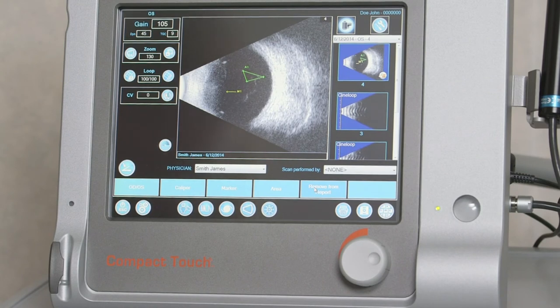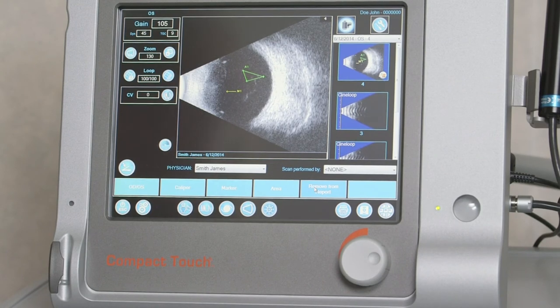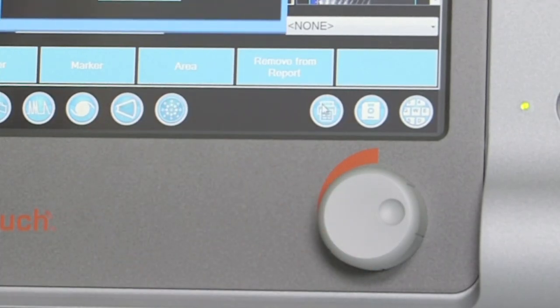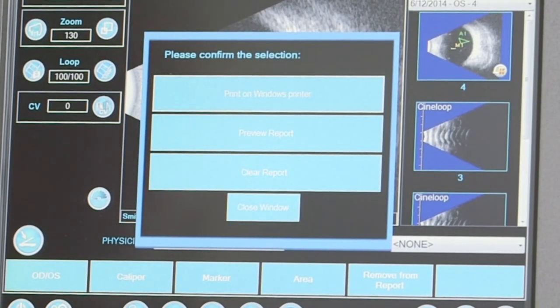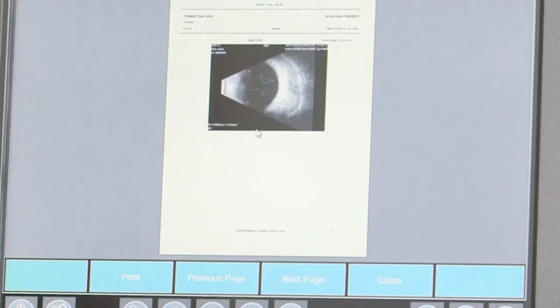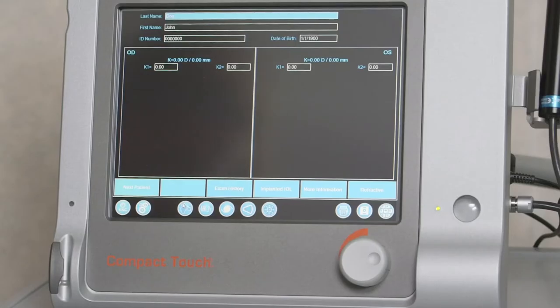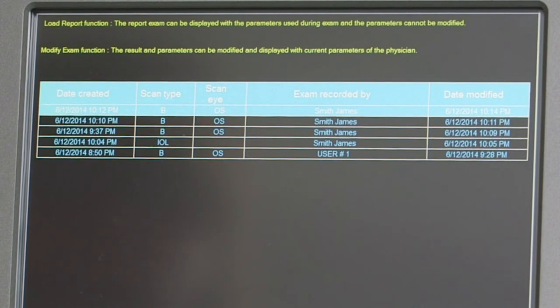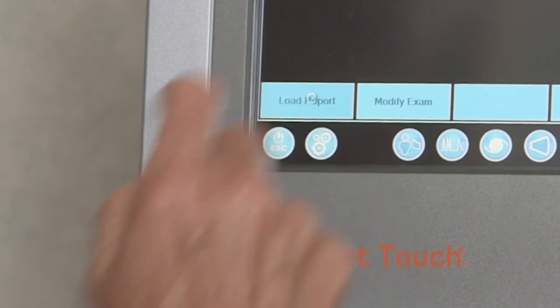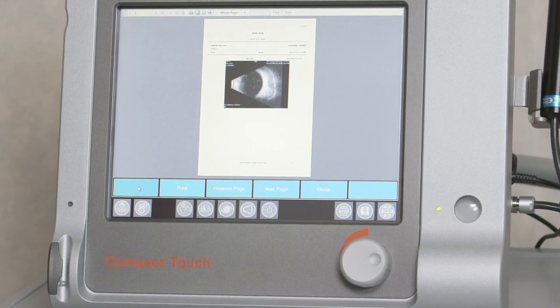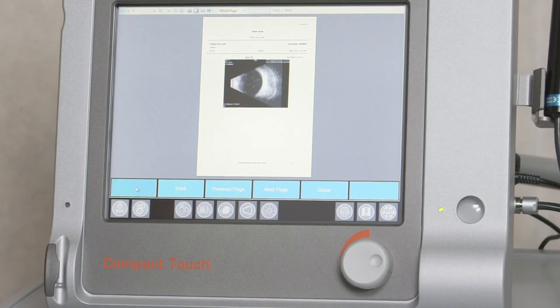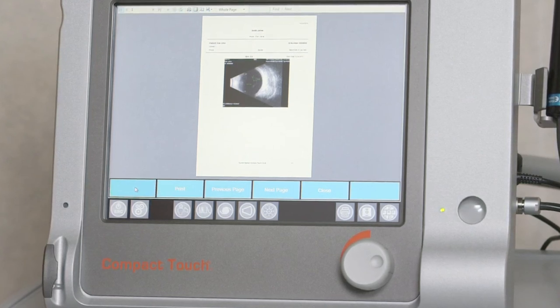Reports from A and B scans, pachymetry, or IOL calculations can be printed via the printer icon from the bottom toolbar using a video printer or a Windows printer. From this menu, the examiner can also opt to preview the report by selecting preview report. The examiner can review previous exams from the patient file screen. Choosing exam history from the toolbar displays a list of all previous exams. After selecting the exam to review or print, press load report to display the report. With the key features of the compact touch hardware and software in mind after this initial review, we will now turn to the top five most frequently asked questions about this device.